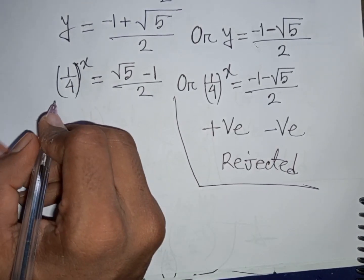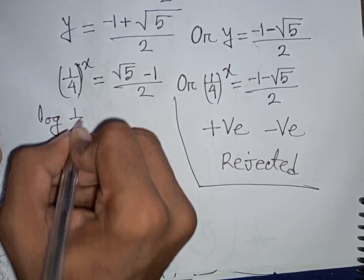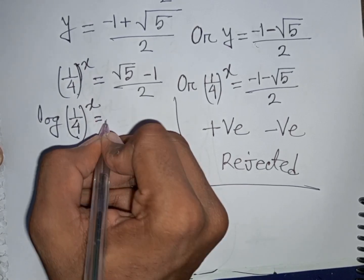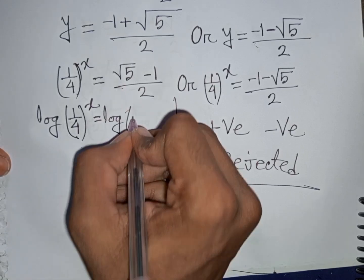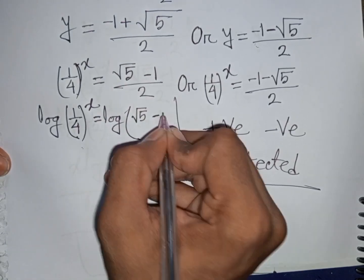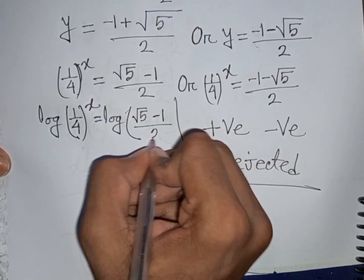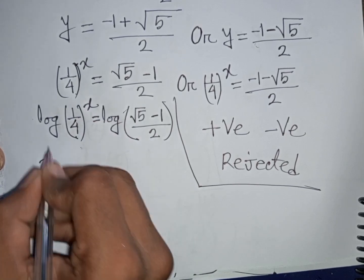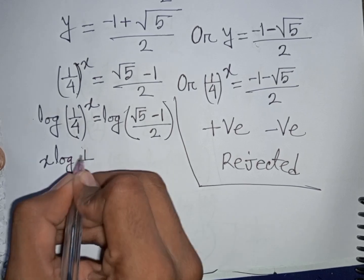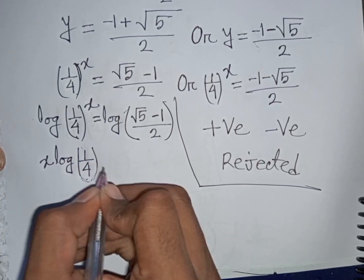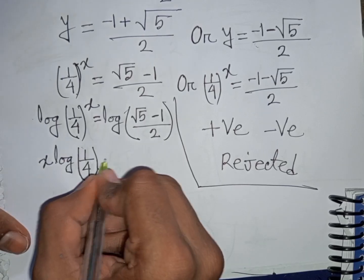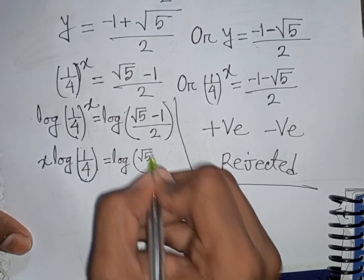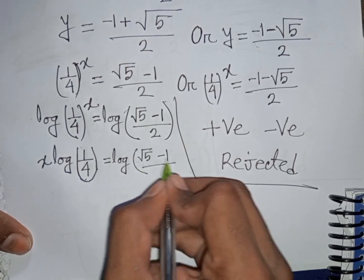From the valid case, we take log of both sides: log of (1/4)^x equals log of (square root of 5 minus 1) divided by 2. Moving the power x to the front gives x times log(1/4) equals log((sqrt(5) minus 1) / 2).